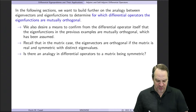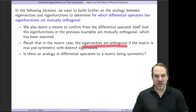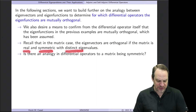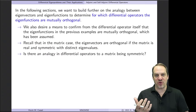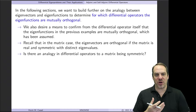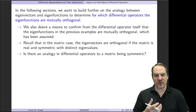In the case of a matrix, the eigenvectors are mutually orthogonal to one another if the matrix itself is real, symmetric, and has distinct eigenvalues. So what is the analogous requirement for a differential operator to have mutually orthogonal eigenfunctions?